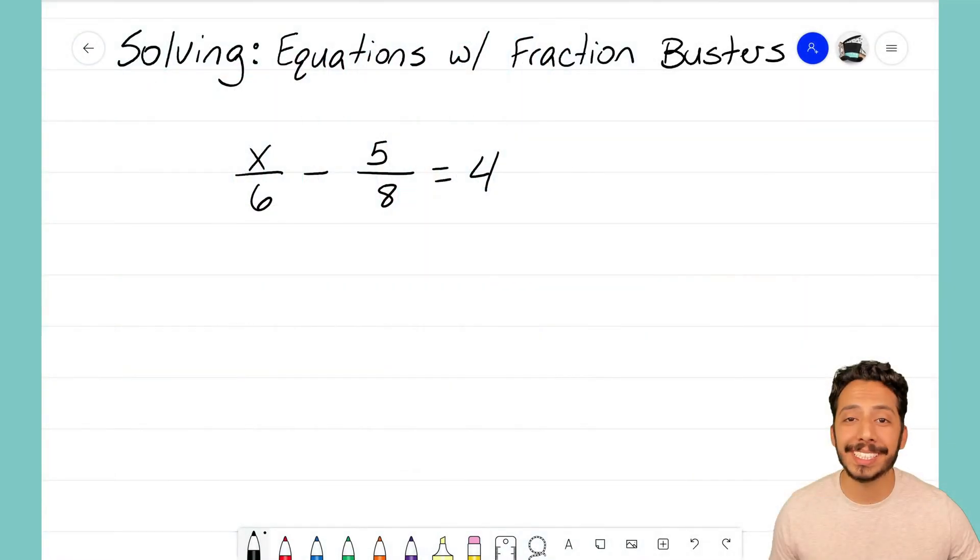ahead and dive right into an example. I have an equation here written out—it's got some fractions—and what we want to do is we want to bust those fractions up and get rid of them. Now the equation I have here is x over 6 minus 5 over 8, and it equals 4. And as it stands, it's